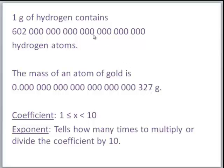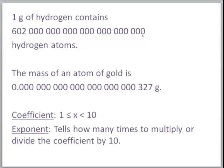To put that large hydrogen number into scientific notation, right now the decimal place is back behind the zero. We want the decimal place to be up here behind the six, so we have to count how many places it takes to move the decimal from there to behind the six.